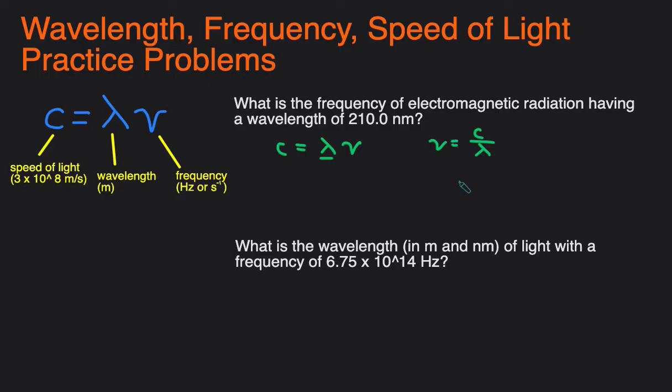So speed of light, now let's plug in some numbers. Speed of light is 3 times 10 to the 8th meters per second.